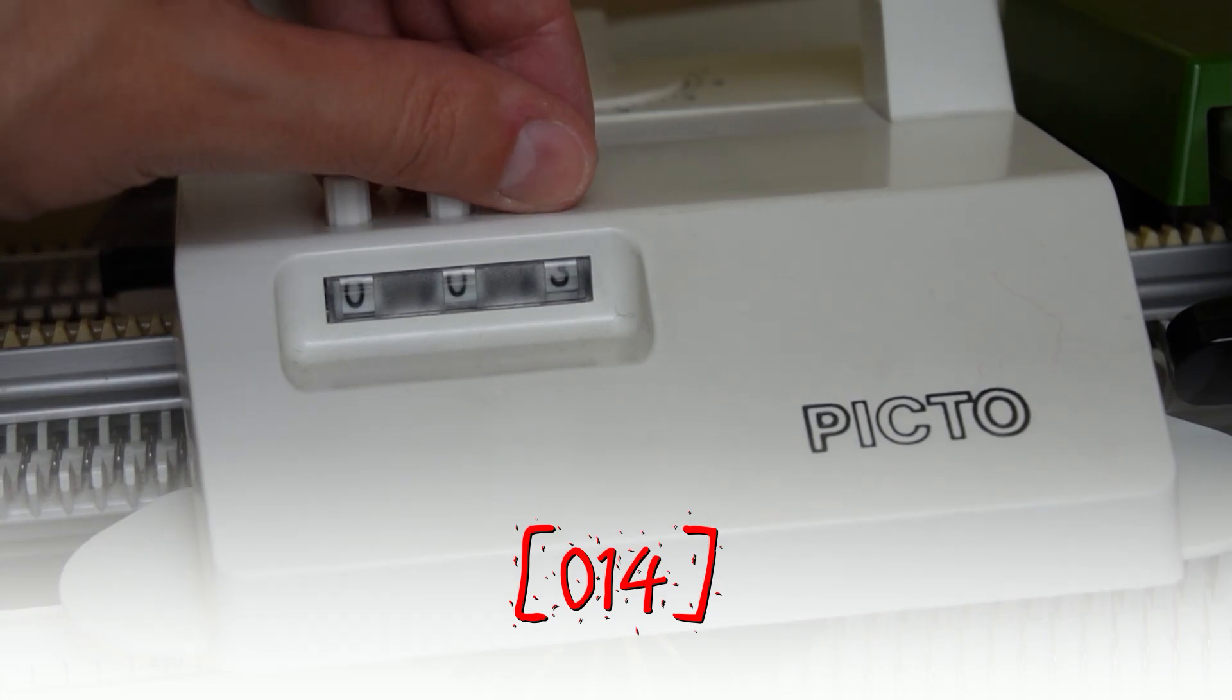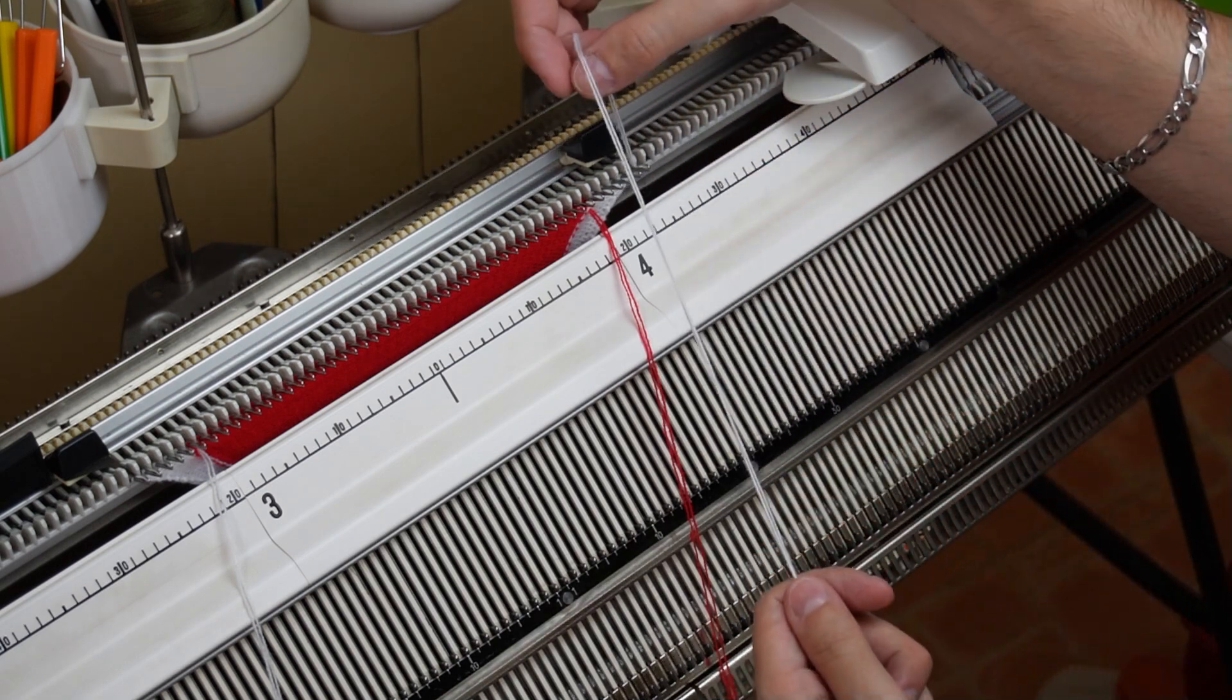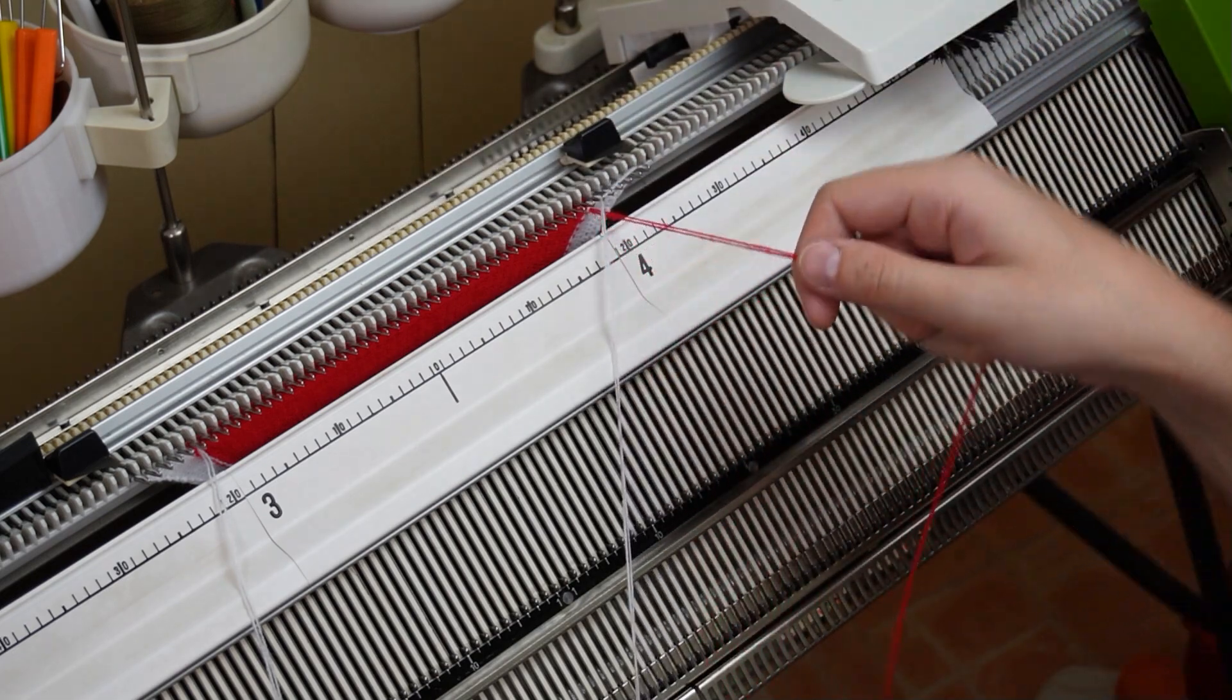Now reset the row counter. At this stage we have to introduce two more yarn strands as well as start making the increases for the white areas at each end.